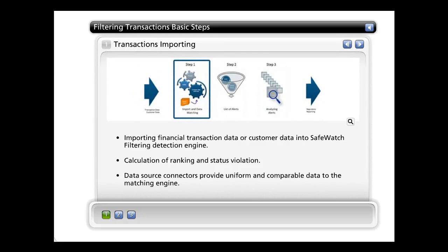The indexation of the lists is a real challenge: determining whether an entry is the same in different lists even though it is spelled differently, or when a given company or individual uses multiple names. The concept of AKA — also known as — is often used here, as well as differentiating information such as the address or ID numbers. From a technical perspective, formatting the financial transaction data as well as the customer data is also required so that the scanning engine can understand the input from the back office system. Data source connectors are used at this step to provide uniform and comparable data to the matching engine.